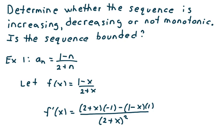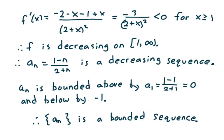We're going to apply a Calc 1 technique to determine whether this sequence is increasing or decreasing. We're going to let f of x equal 1 minus x over 2 plus x and take the derivative. Applying the quotient rule, f prime of x is equal to (2 plus x)(negative 1) minus (1 minus x)(1), all divided by (2 plus x) squared. Simplifying, we get f prime of x equals negative 3 over (2 plus x) squared.